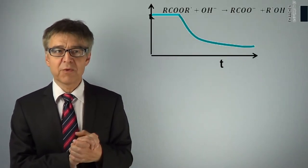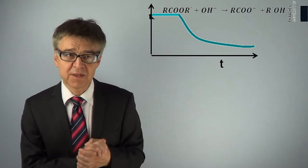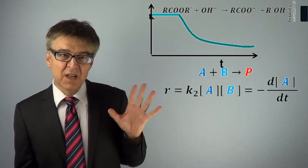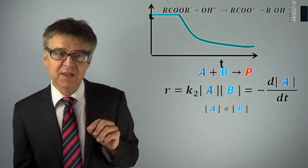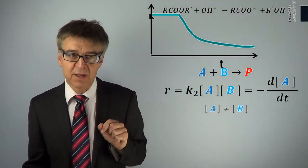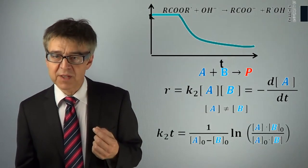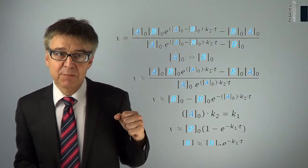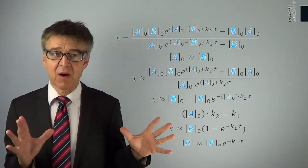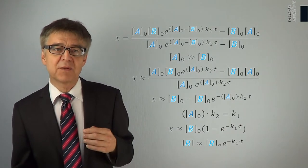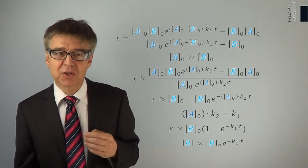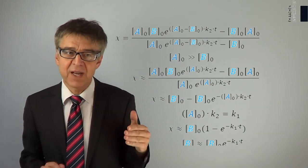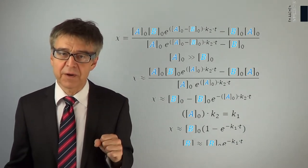If we perform a reaction like ester hydrolysis with reactants in non-stoichiometric amounts, integration of the rate law is somewhat complicated and we obtain a more complex equation. If one of the reactants is present in large excess, however, this equation simplifies to a simple exponential function again — a first-order reaction, referred to as a pseudo-first-order reaction.